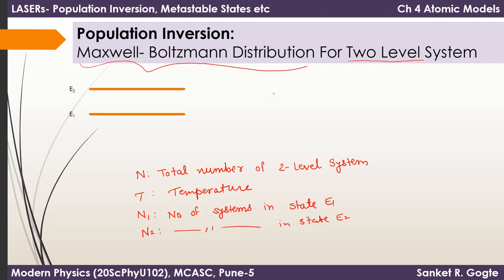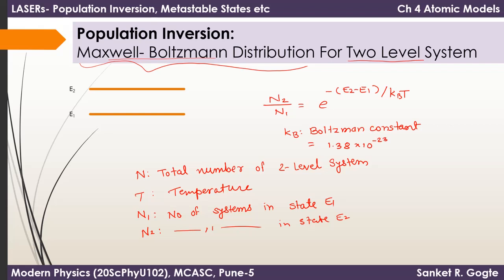Then the ratio n2 by n1 is given by the Maxwell-Boltzmann distribution: n2/n1 = e to the power of minus (E2 minus E1) divided by (k_B times T), where k_B is the Boltzmann constant equal to 1.38 × 10⁻²³ joules per kelvin.